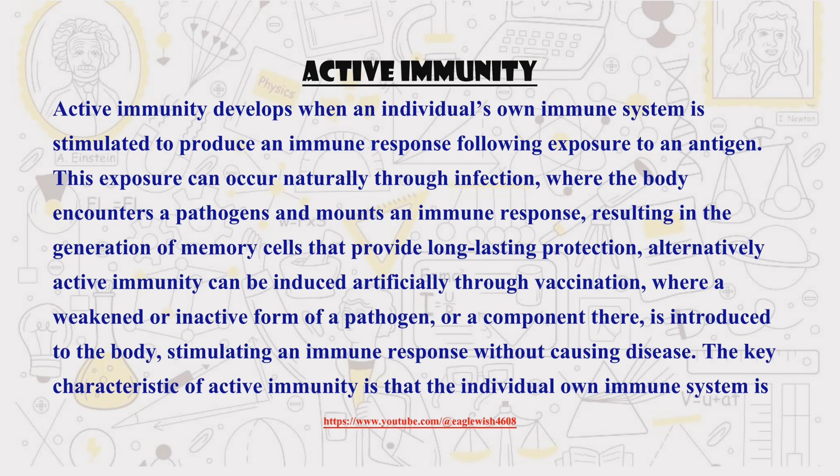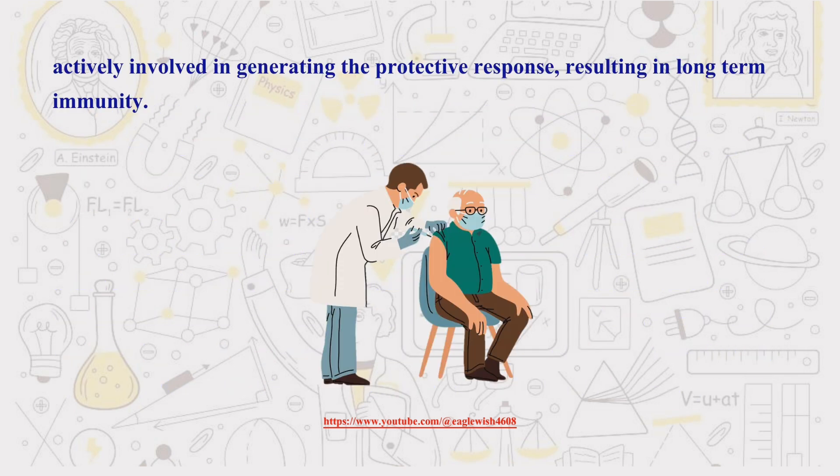Now we'll shift gears and explore how immunity develops. We will start with active immunity. Active immunity is like building your own superhero suit — when exposed to an antigen, your body actively builds its own defenses like antibodies or immune cells. This occurs through infection or vaccination.